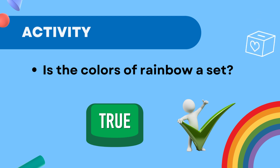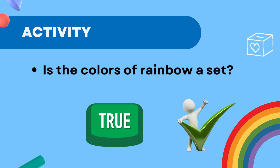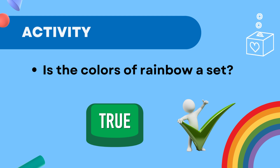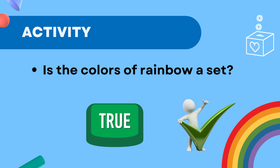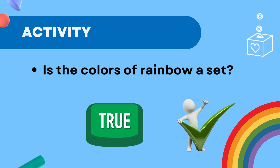Whereas for the previous activity, where we were discussing about listing down the best players of a cricket team, we don't really know what the best players could be. Hence, the question automatically refers to a false answer.